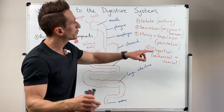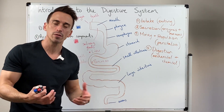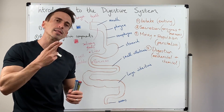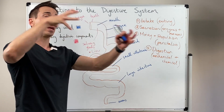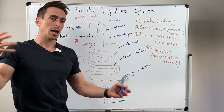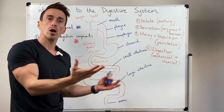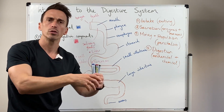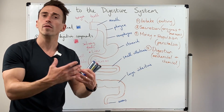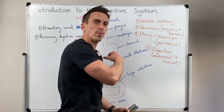Chemical digestion involves enzymes that are being released or secreted from the digestive tract. They're molecular scissors that chop up big carbohydrates, big triglycerides, and big proteins into their smaller components — glucose, galactose, fructose for example, fatty acids and glycerol, or amino acids respectively.